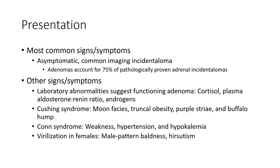Cushing's syndrome features include moon face, truncal obesity, purple striae, and buffalo hump. Additional features of Cushing's syndrome include weakness, hypertension, and irregular menstrual cycles. Androgen-secreting adenomas may cause virilization in females, presenting with male-pattern features such as hirsutism.